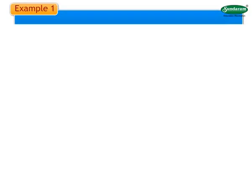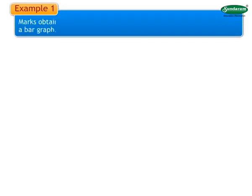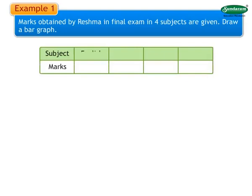Now let's see how to draw a bar graph. Example 1: Marks obtained by Reshma in final exam in 4 subjects are given. Draw a bar graph. In English she scored 70 marks, in Marathi she scored 65 marks, in Science Reshma scored 80 marks, and 75 marks were scored in Maths.